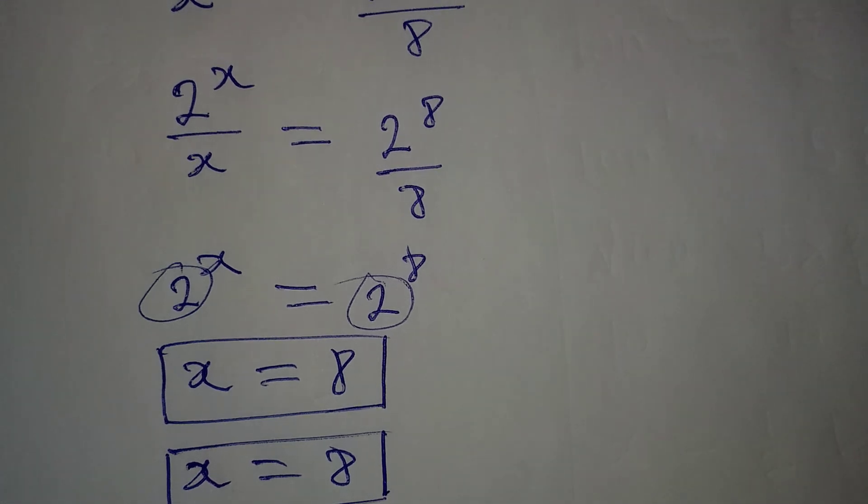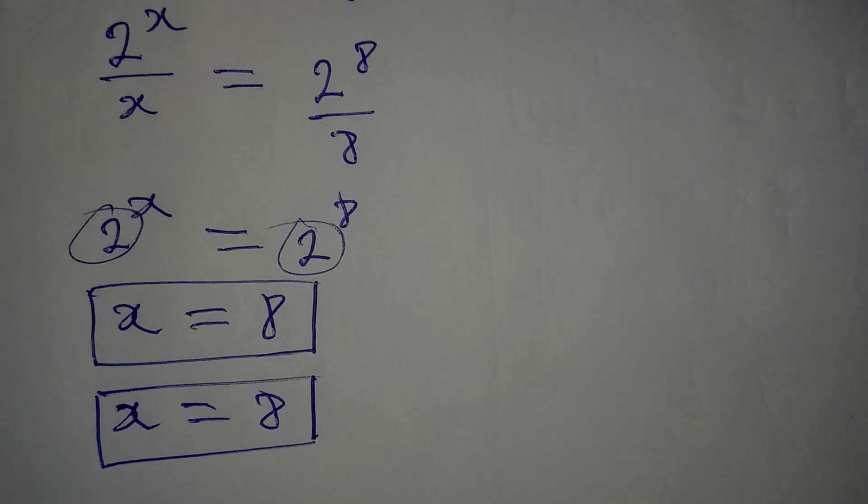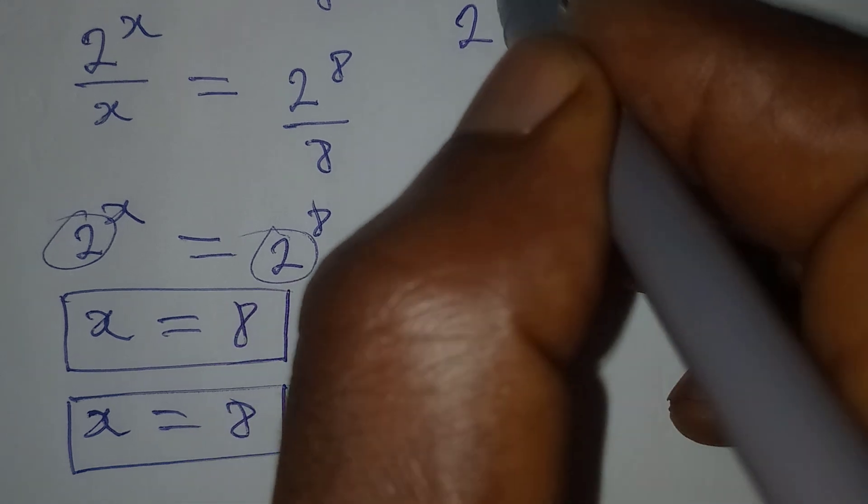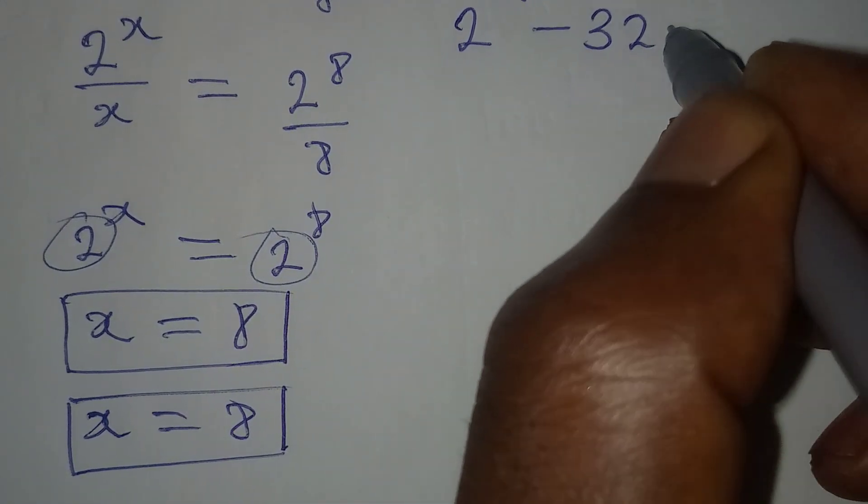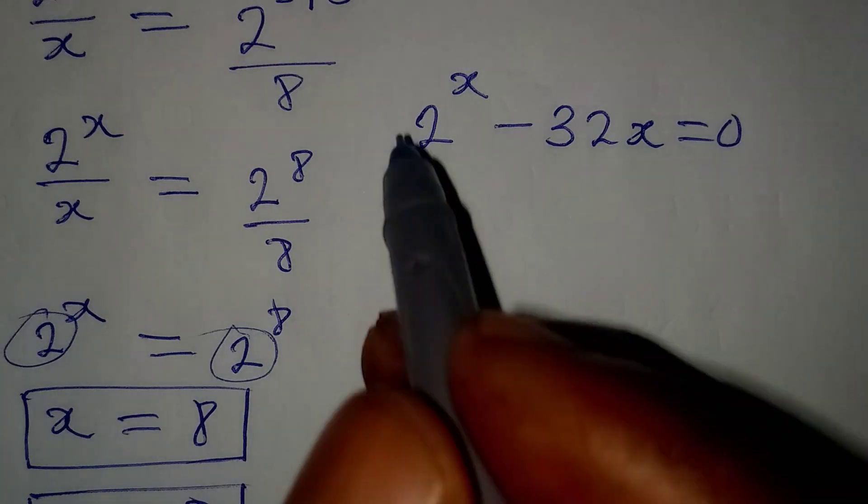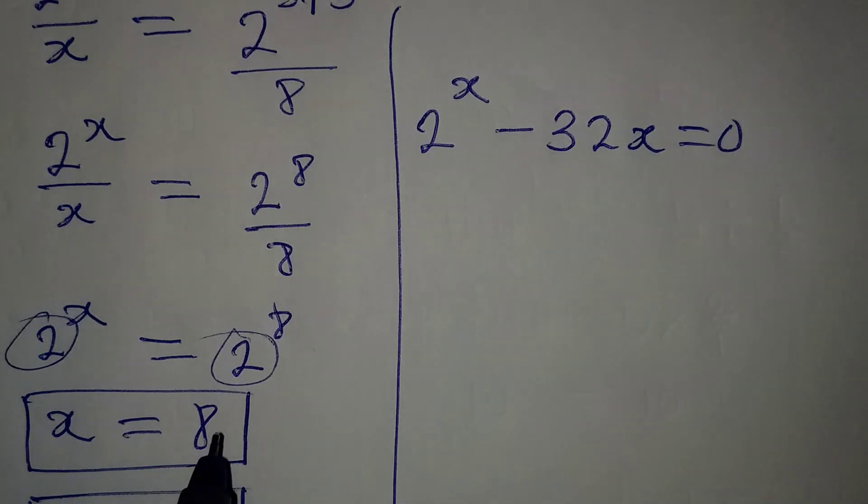But we need to put it back into the equation to see that we'll have the same thing on the right and on the left. We have 2 to the power of x minus 32x equal to 0. So this is the original equation. And now that x is 8...